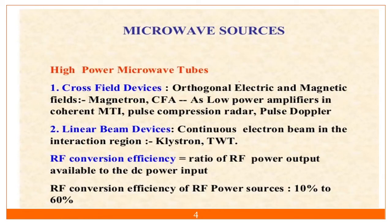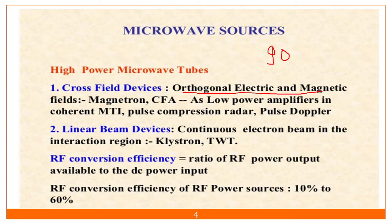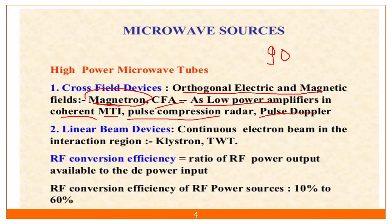In the cross-field amplifier, the orthogonal electric field and magnetic field are there — they are 90 degrees apart from each other. Orthogonality means 90 degrees apart. So electric field and magnetic field are orthogonal to each other, like in magnetron and CFA. It is used as a low power amplifier in coherent MTI — moving target indicator radar — pulse compression radar, and pulse Doppler radar. The magnetron is used in our day-to-day life in microwave ovens.